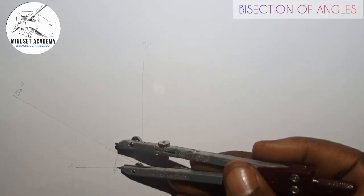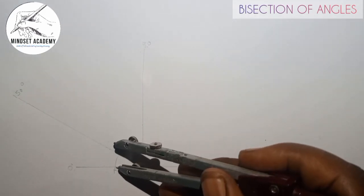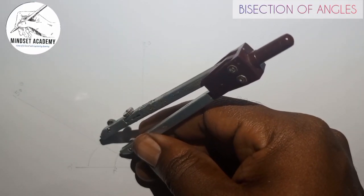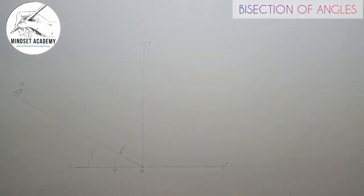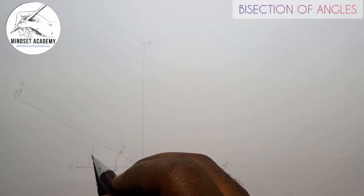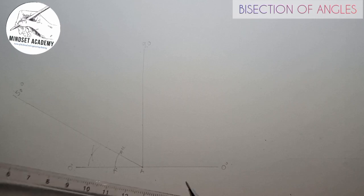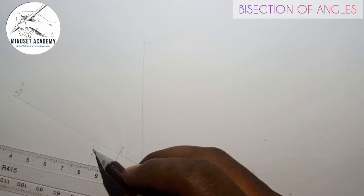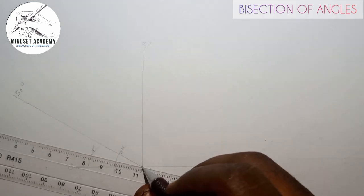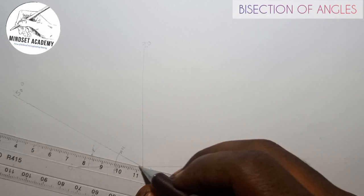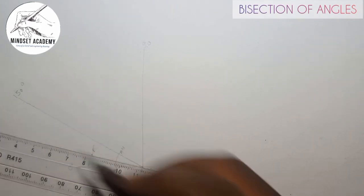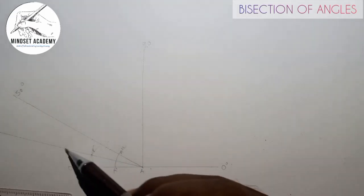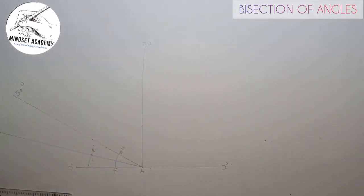So I'm going to bisect in between A prime and A prime prime. Just place your compass at any given radius. At A prime, you strike an arc. At A prime prime, you also strike another arc, so they are meeting at this point. So if I bisect that point and draw a line through that point P, this will be half of 30. Because from here to here we said it's 30 earlier. Bisecting means dividing into two, so you're having half of 30, which is 15.